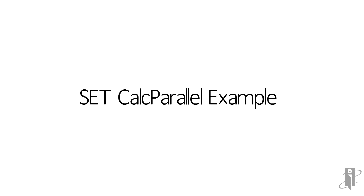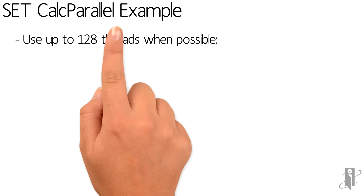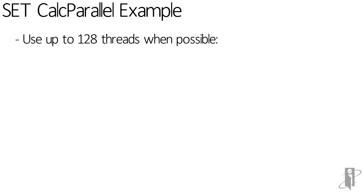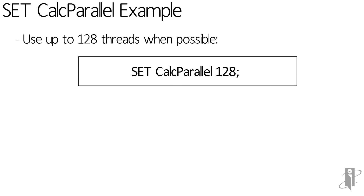So let's say I wanted to use all 128 CPUs on my super powerful Essbase Exalytics T5 machine — I could say SET CalcParallel 128 and it will launch up to 128 simultaneous activities.